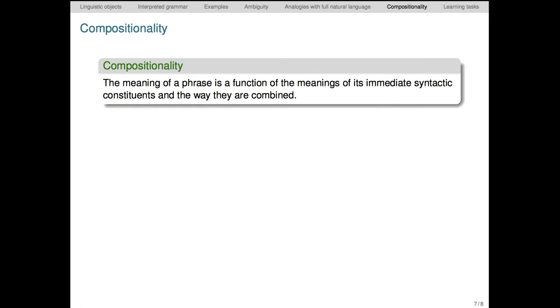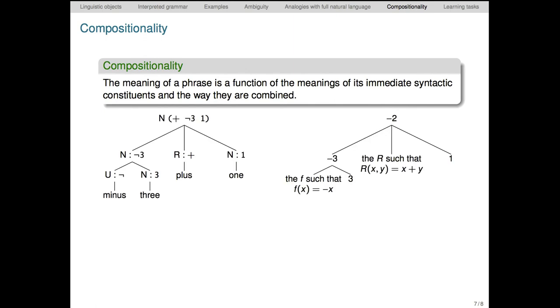We come now to one of the guiding ideas of this lecture, the principle of compositionality. The principle says the meaning of a phrase is a function of the meanings of its immediate syntactic constituents and the way they are combined. For instance, the meaning of this entire tree is negative two. That meaning is derived from the meaning of its immediate constituent parts, in a way that's paralleled on the denotation side and in the logical forms. Those meanings are in turn derived from the meanings of those parts, and so forth, until we reach the lexicon where the meanings are presumed to be irreducible. We just look them up.